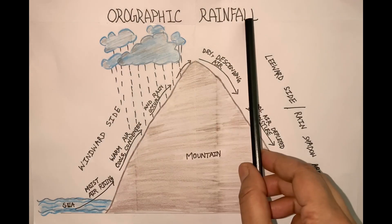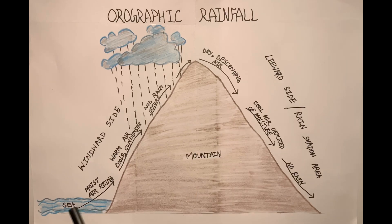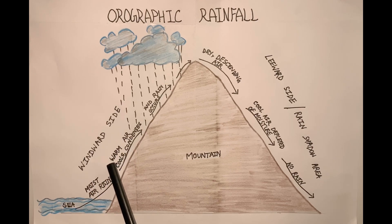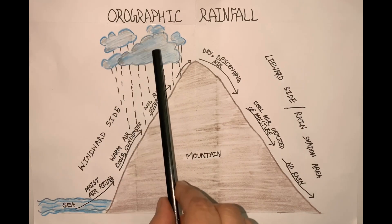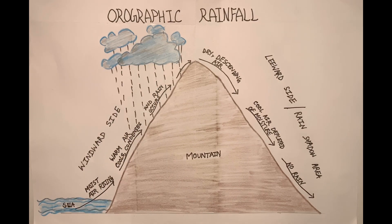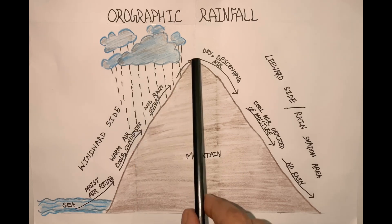The second type of rainfall is orographic rainfall, also known as relief rainfall. When moisture-laden winds are unable to cross the mountains, they are forced to rise up. As this moisture-laden air rises up, it cools adiabatically and condenses, forming clouds. When the clouds become very heavy with the accumulation of water droplets, they finally burst and rainfall occurs.